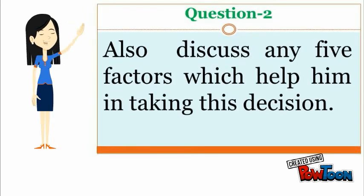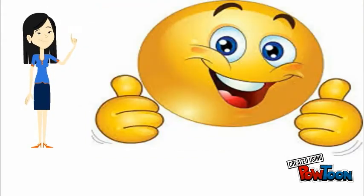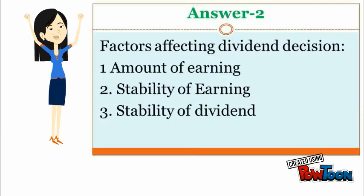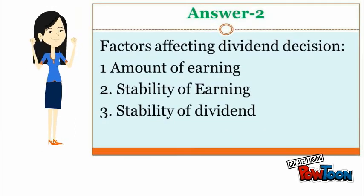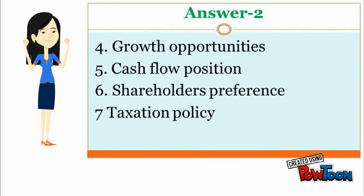Question: Also discuss any 5 factors which help him in taking this decision. Answer — Factors affecting dividend decision: 1. Amount of earning. 2. Stability of earning. 3. Stability of dividend. 4. Growth opportunities. 5. Cash flow position.